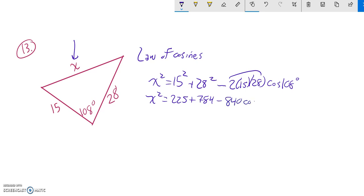And that's multiplied by the cosine of 108 degrees. And then I'm going to shove all this in the calculator. It spits out 1,268.57.